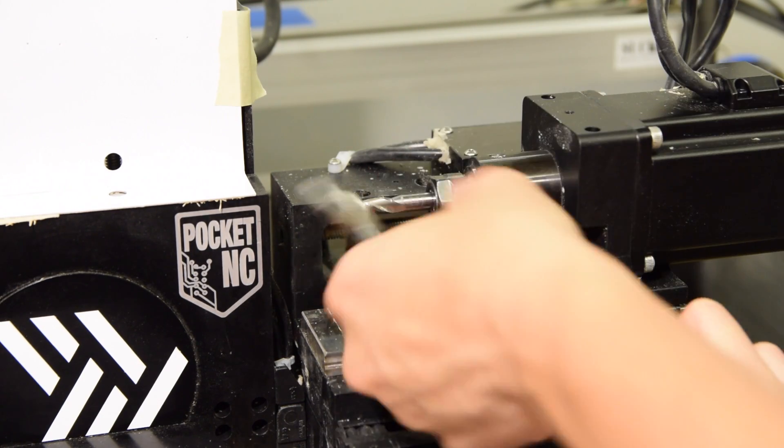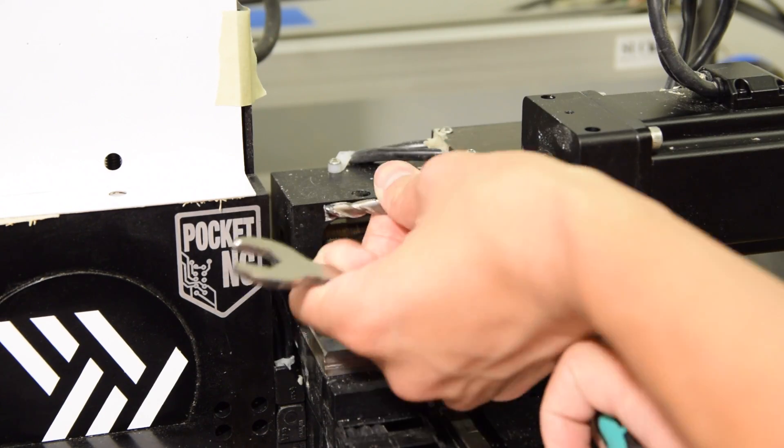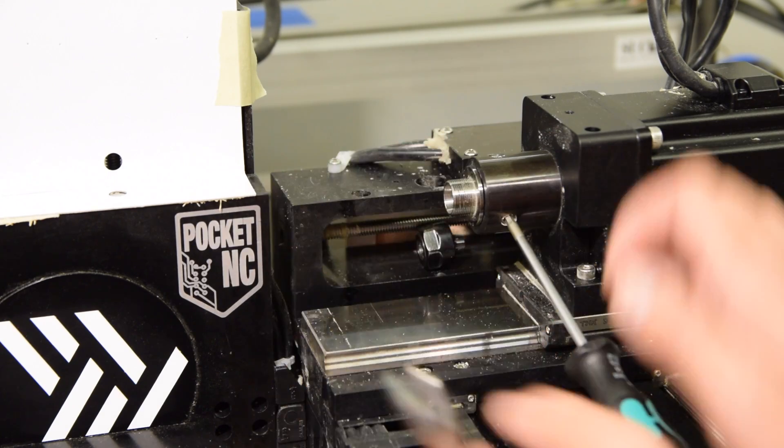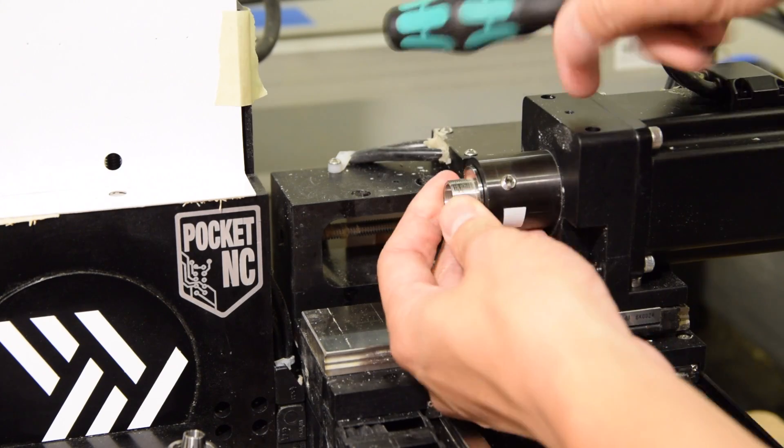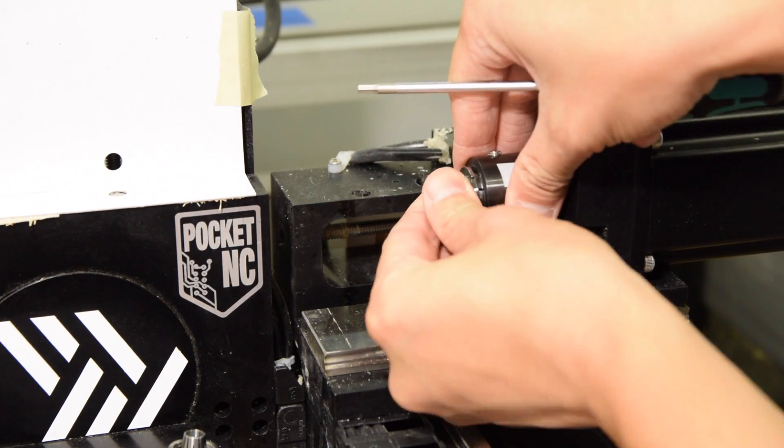I want to be able to load up tools more easily and also do so if the machine is in the middle of an operation. So I came up with a tool tightening fixture that would securely grip a tool holder and allow me to install end mills anytime, anywhere.